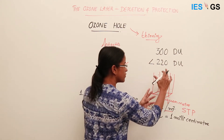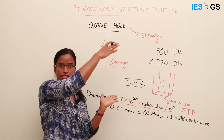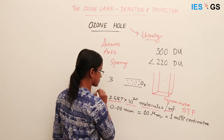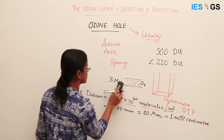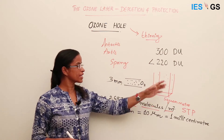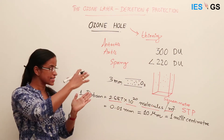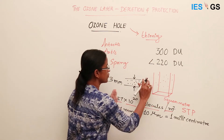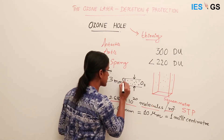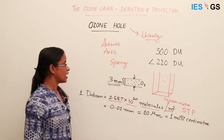If you take all the ozone molecules above this column across the entire atmosphere and arrange them in a pure ozone layer, how much thickness would that come to? It would come to around 3 millimeters thickness. We are taking all the ozone molecules above a particular surface area, arranging them in a pure ozone layer, and measuring how thick that compressed layer would be. 300 Dobson units means 3 mm thickness of ozone layer.